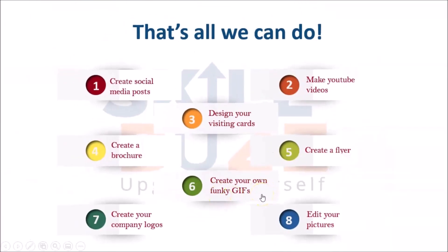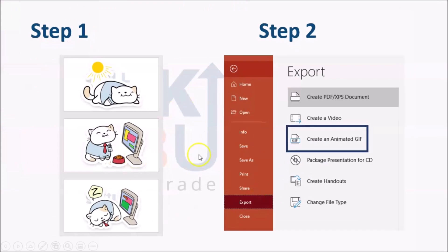Then I can create my own funky GIFs. If I input multiple images across multiple slides — for example, I've placed different stickers on three slides — I can go to the export option from the file tab and use the option 'Create an Animated GIF'. From there I can set personalized settings like timing, duration, and how the slides move, and create a GIF file very easily where the three slides play continuously.